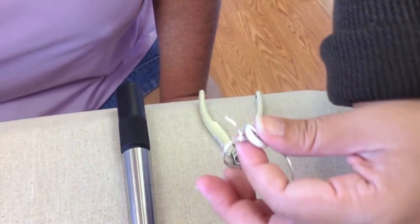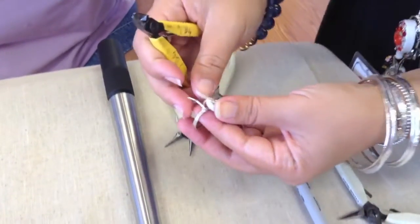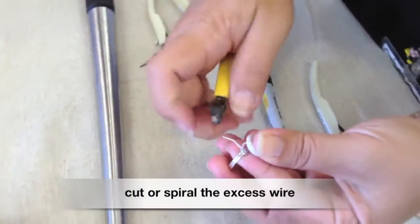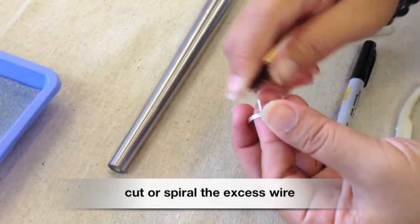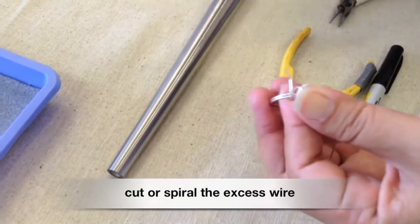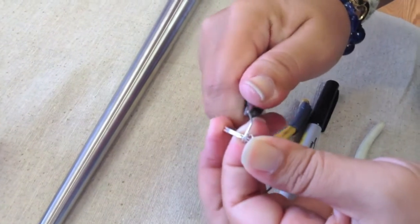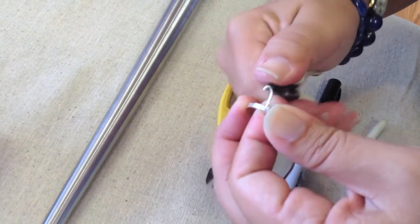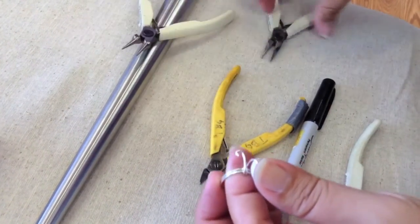If you have excess wire at the end of your tail what you can do is begin a spiral so you can flush cut the end of that wire anywhere from 3 eighths of an inch to about half an inch tail depending on how big your spiral and with your round nose plier start coiling.